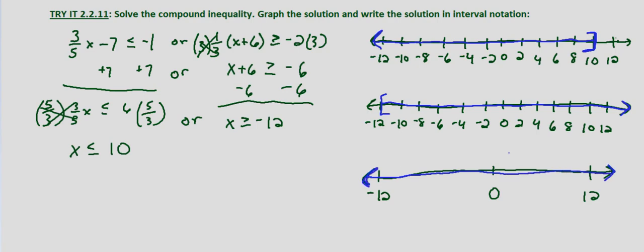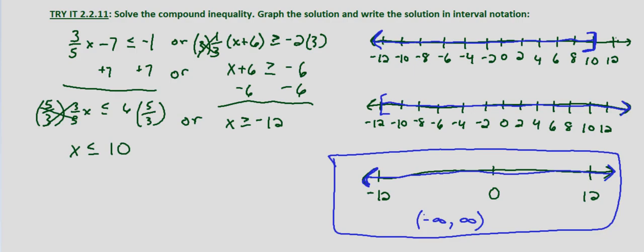And any value we plug into here will satisfy one or the other inequality. And therefore the solution is all real numbers and in interval notation that would be negative infinity to infinity. So graphing it, it's just the entire number line in both directions. And in interval notation, it would be noted as negative infinity to infinity.